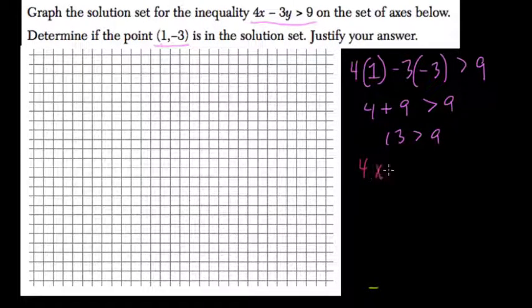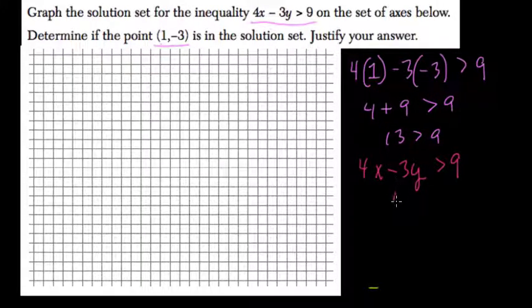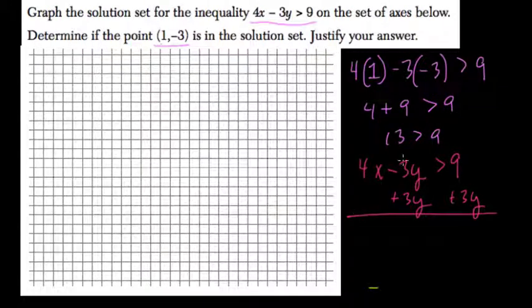Next, for me, what I like to do when I graph is rewrite in y equals mx plus b format. So that means I want y all by itself. I add 3y to both sides. I just do that to get rid of the negative 3y. I'll turn it into a positive.